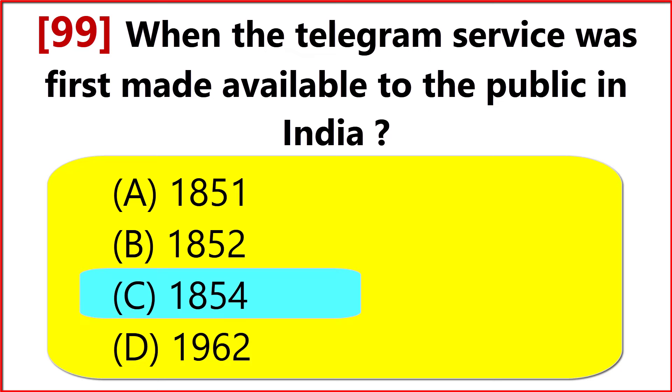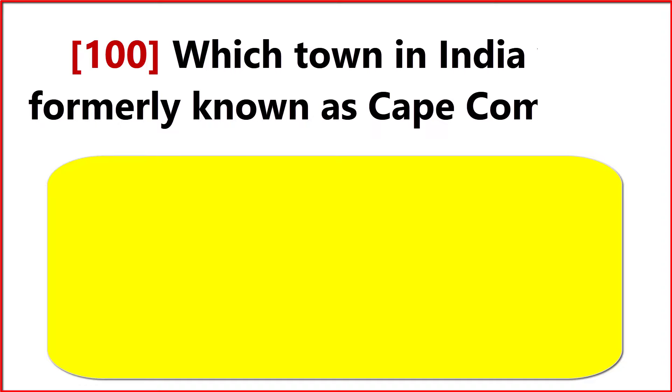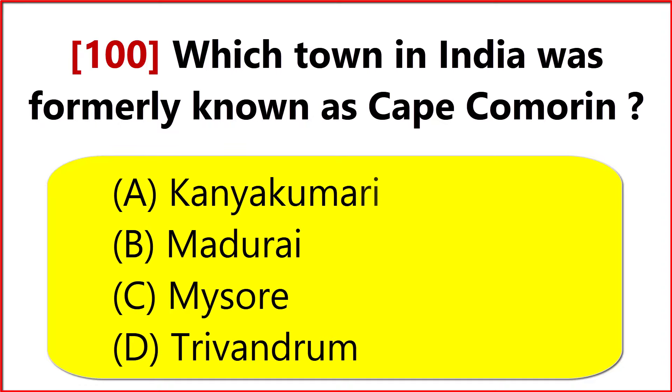When was the telegram service first made available to the public in India? Option C: 1854.